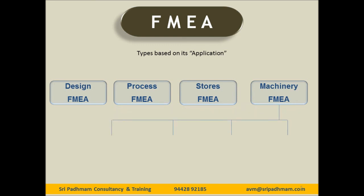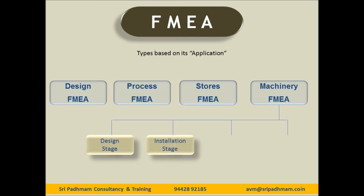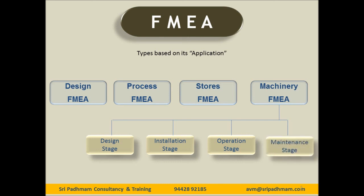Finally, FMEA shall also be applied on equipment, which is called Machinery FMEA or Equipment FMEA. Machinery FMEA may be further broken into four elements: first, the design stage when the machine is being designed; second, installation or commissioning stage when the equipment is being installed and commissioned; third, during the operation of the particular equipment; and fourth, on maintenance — the regular periodical maintenance stage.